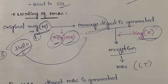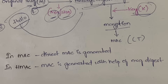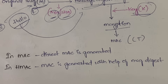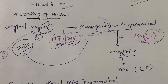In normal MAC we generate the MAC directly, but in HMAC - hash-based MAC - we first generate the message digest, and from the digest we generate the MAC code. Since it is hash-based, you use one of the hashing algorithms - it could be MD5 or SHA - according to your convenience.